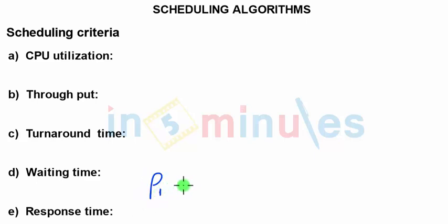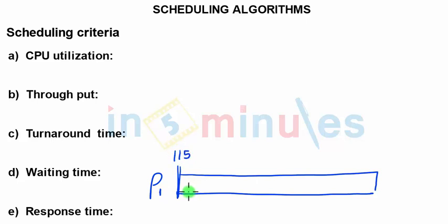It means, consider process 1. Process 1 entered at 115th second and was waiting till 215. So there was a long wait period after which process 1 started but again got stopped at 220.